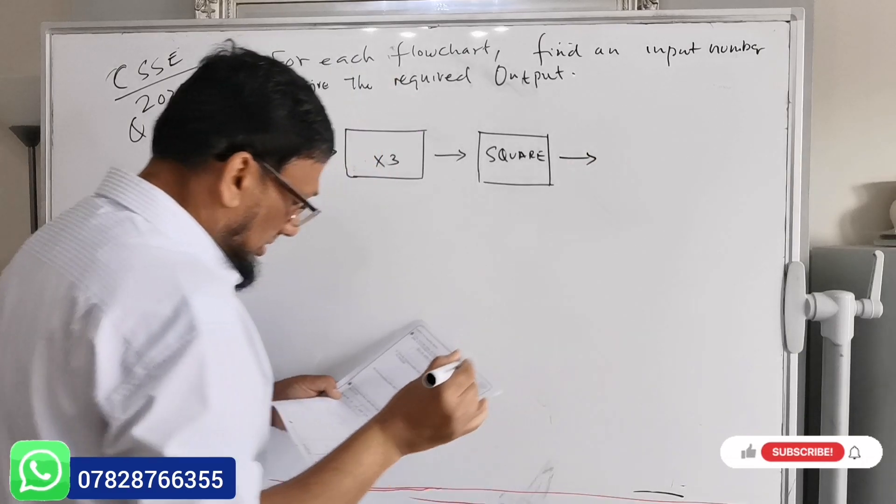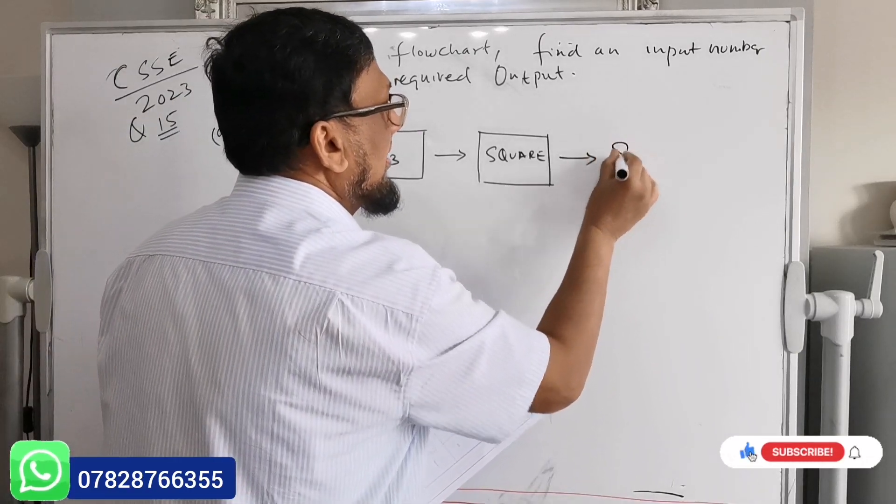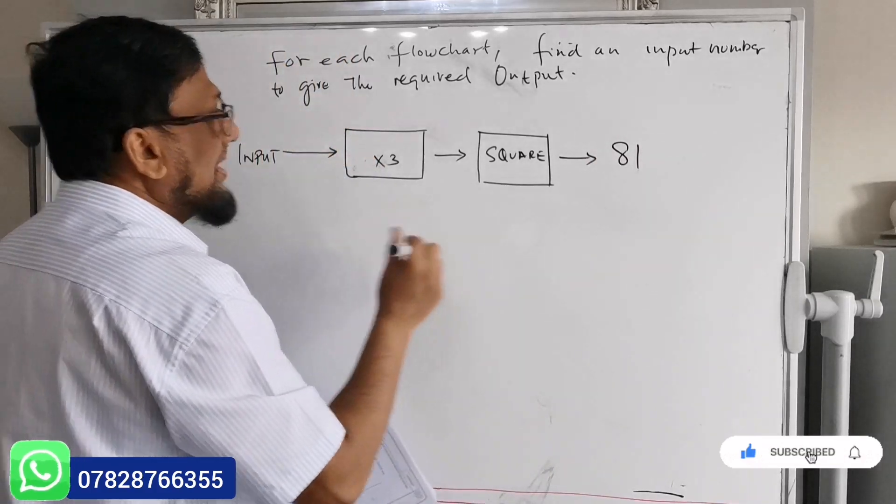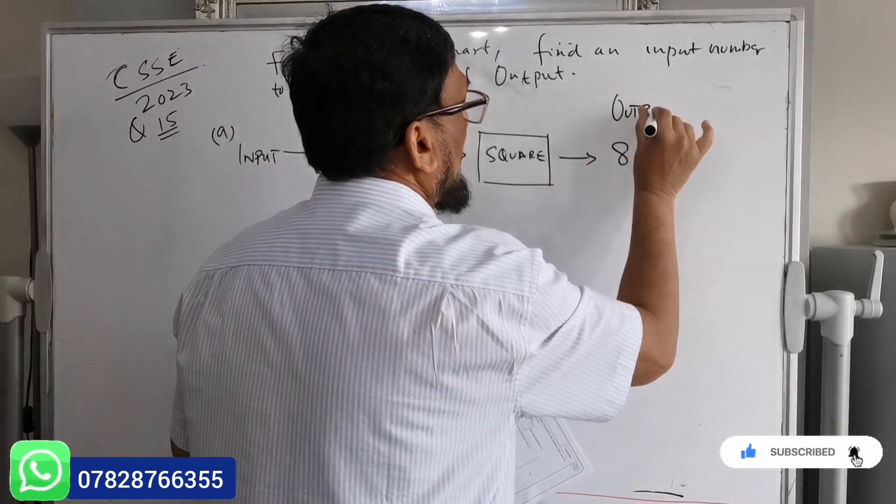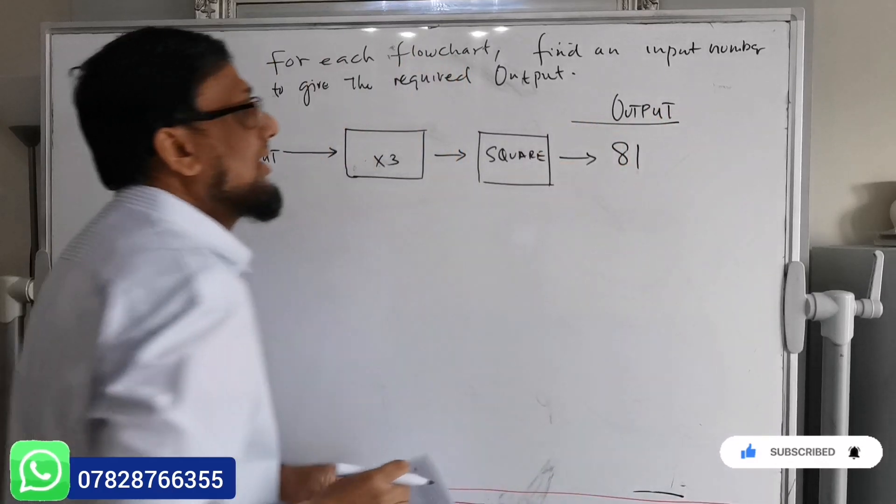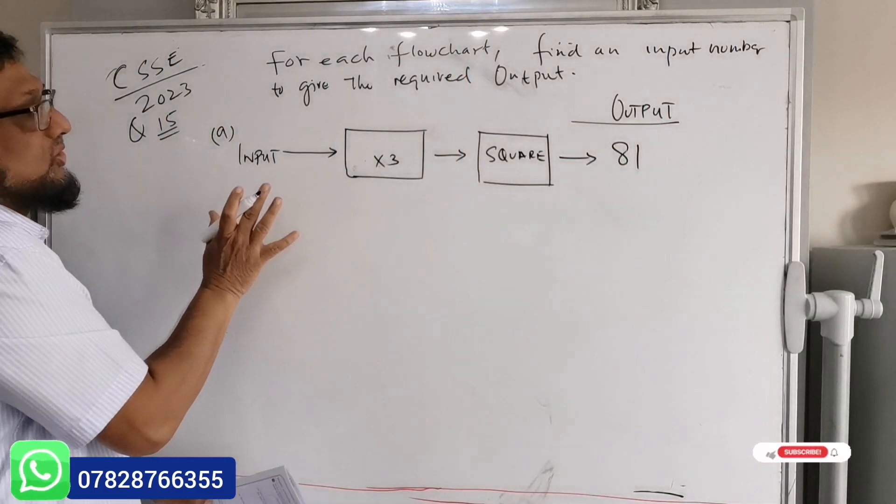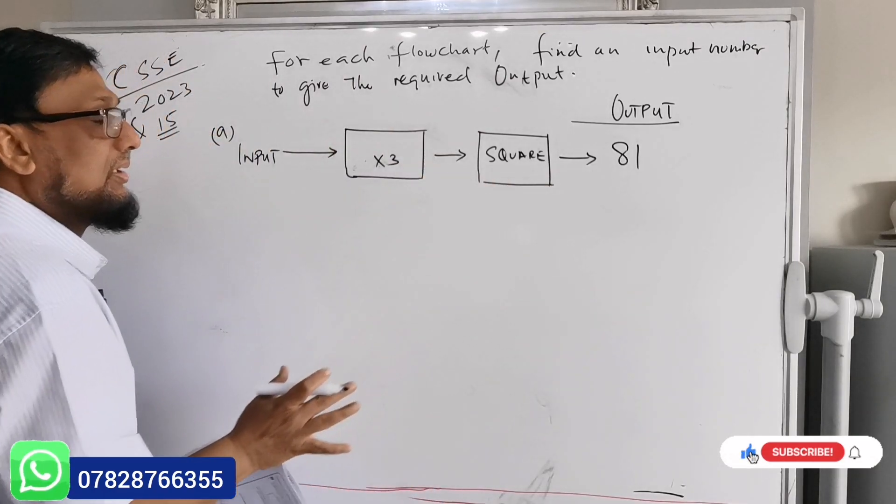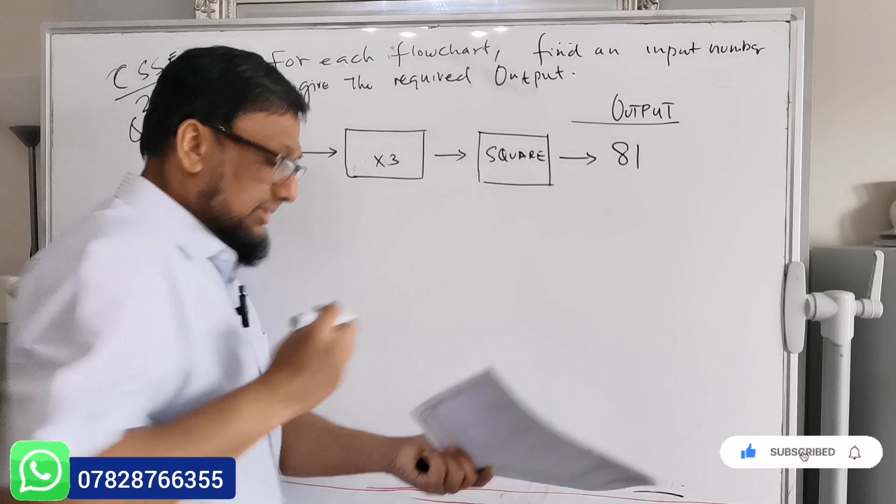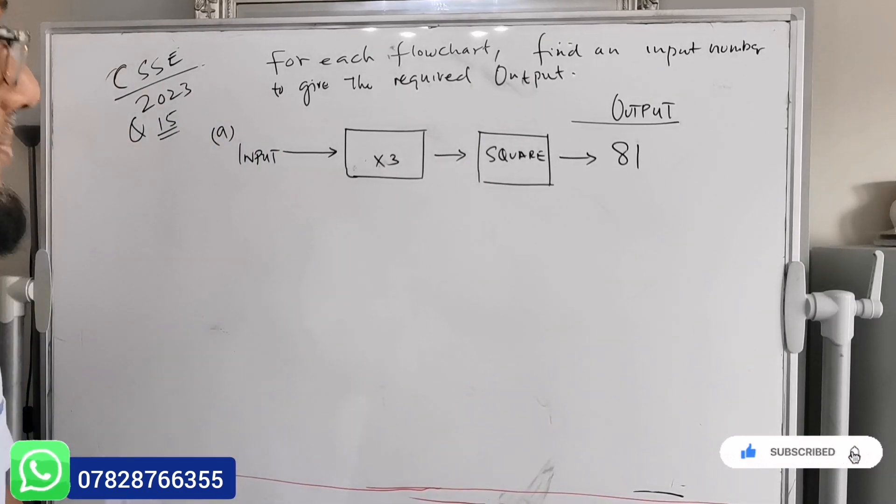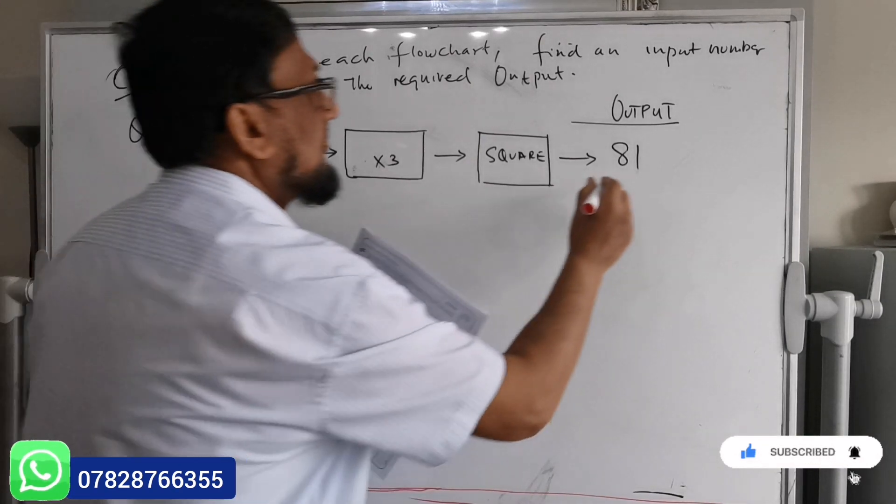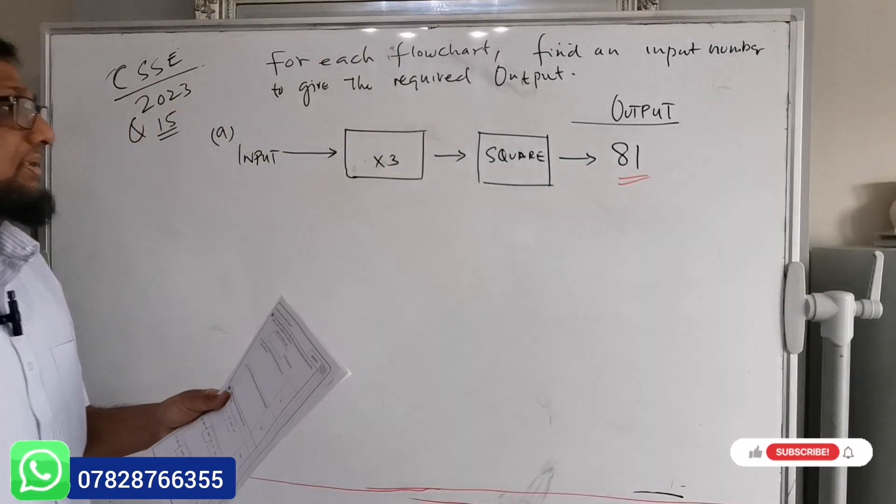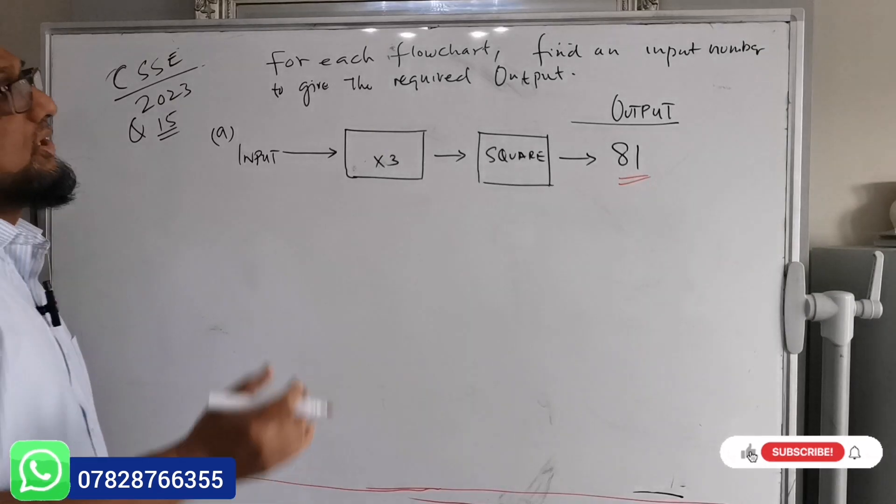And arrow and this one is 81, so the output is 81. Basically this is the output. It's like a function machine. They give you functions, what's happening, and they've already given the answer so the output you know is 81.